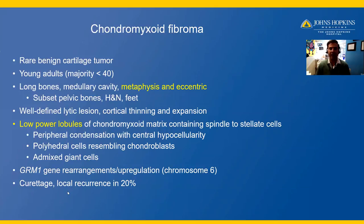Treatment is curettage. It's important to note that local recurrences may occur in 20% of cases. The histologic differential diagnosis may include various chondrosarcomas or, given the bland architecture, fibrous dysplasia — depending upon the sample. Always remember to keep the radiographs in mind when interpreting a bone tumor.